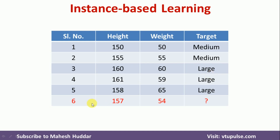In instance-based learning, whenever we give these training examples, the training never happens. What actually happens is whenever we want to classify a new instance, its relationship is identified with respect to the given training examples, and based on that a target value is assigned. We use something called a distance measure to find the relationship of the new instance with respect to the training examples. Once we find the distance, based on the nearest neighbors we find the target function value.